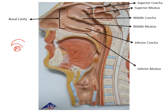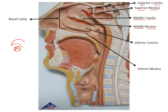Everywhere there is a nasal concha, there is going to be a tube underneath it called a meatus. The superior nasal concha has a superior nasal meatus underneath it — a little hollow opening. The middle nasal concha has a middle nasal meatus, and the inferior nasal concha has the inferior nasal meatus. You don't have to say 'nasal,' but I prefer it because it reminds me what I'm talking about.